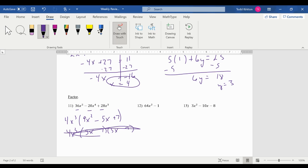Second one has two terms. First thing I check, is it a difference of two squares? 64 is a perfect square. Negative 1 is a perfect square. So 8x plus 1, 8x minus 1.